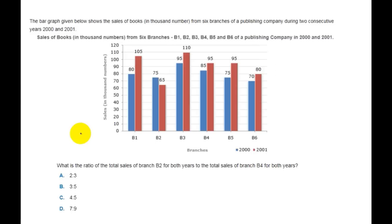Next is bar diagrams. The bar graph shows the sales of books in thousands from 6 branches of a publishing company during consecutive years 2000 and 2001. The branches are B1, B2, B3, B4, and B6.